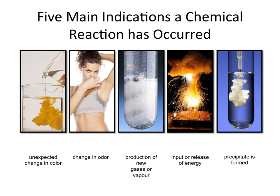The third indicator is the production of new gases or vapor. Here we can see little bubbles being created — that's an indicator of gases being formed. We can also see water vapor that wasn't there before.